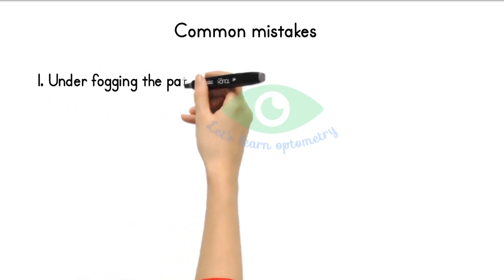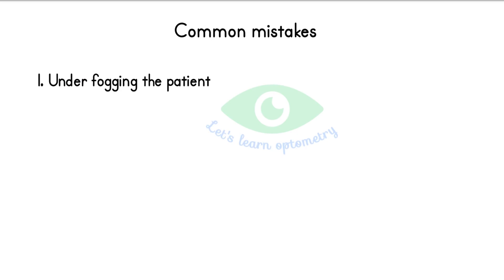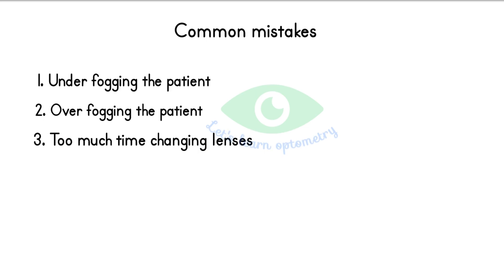Common mistakes: Under-fogging the patient — the examiner puts in plus spherical power at a level not sufficient to reduce visual acuity or keep accommodation in check, so the patient continues to accommodate to bring the conoid of Sturm closer to the retina. Over-fogging the patient — the examiner puts in too much plus spherical power, pushing the conoid of Sturm too far in front of the retina, unnecessarily prolonging the defogging process. Allowing too much time between removal and insertion of lenses — replacing the fogging lens should be done as quickly as possible, achievable by having the replacement lens in hand while removing the fogging lens.